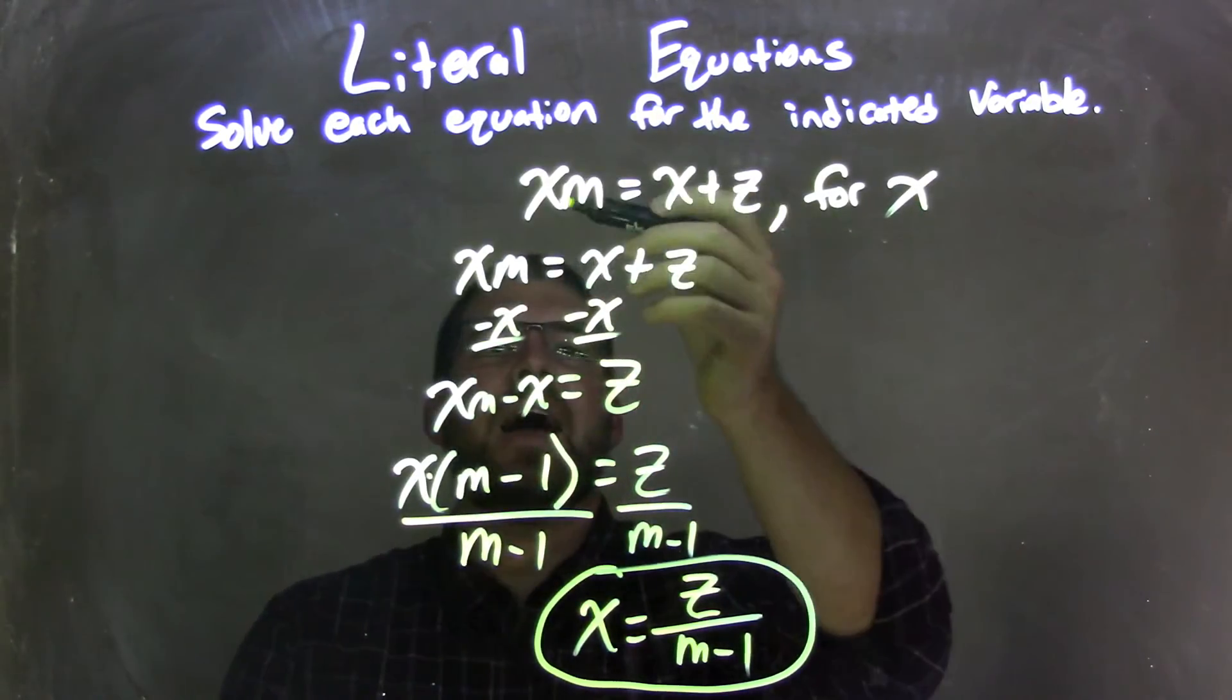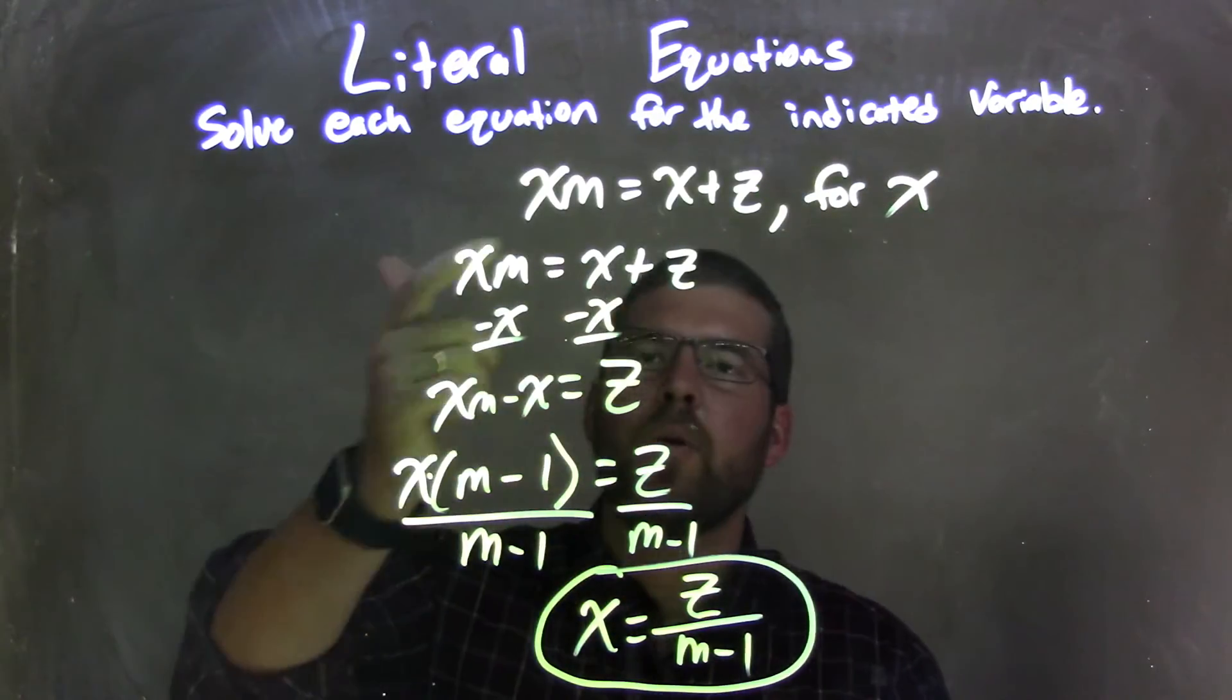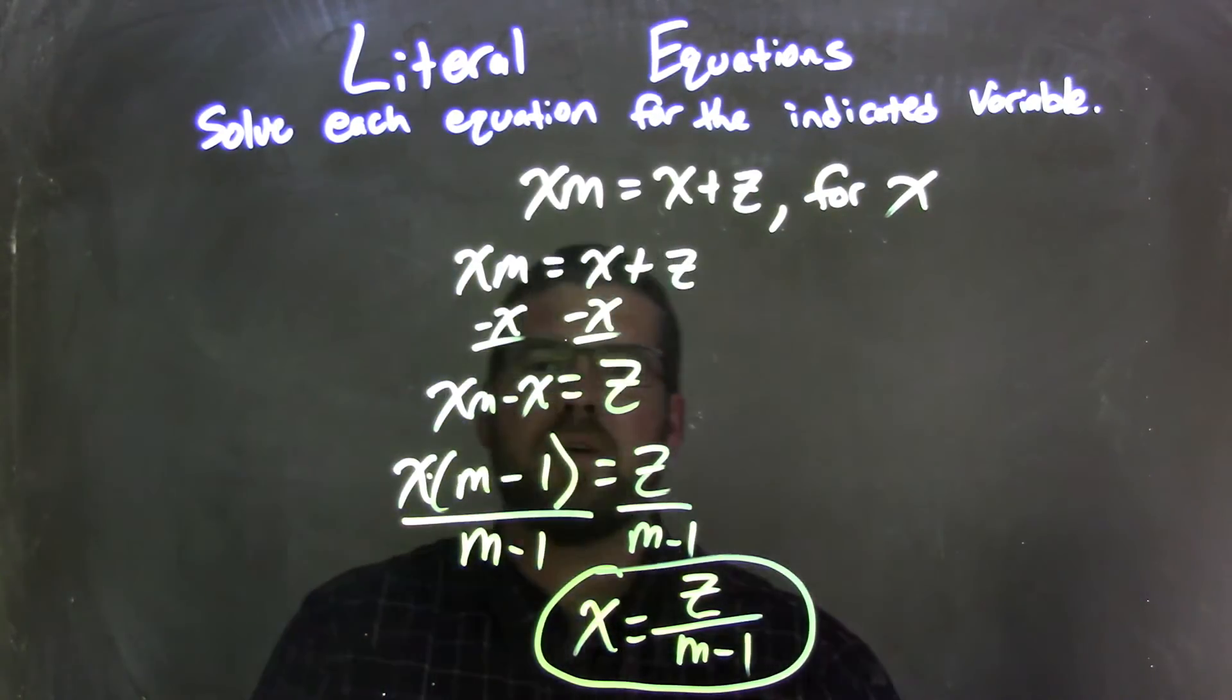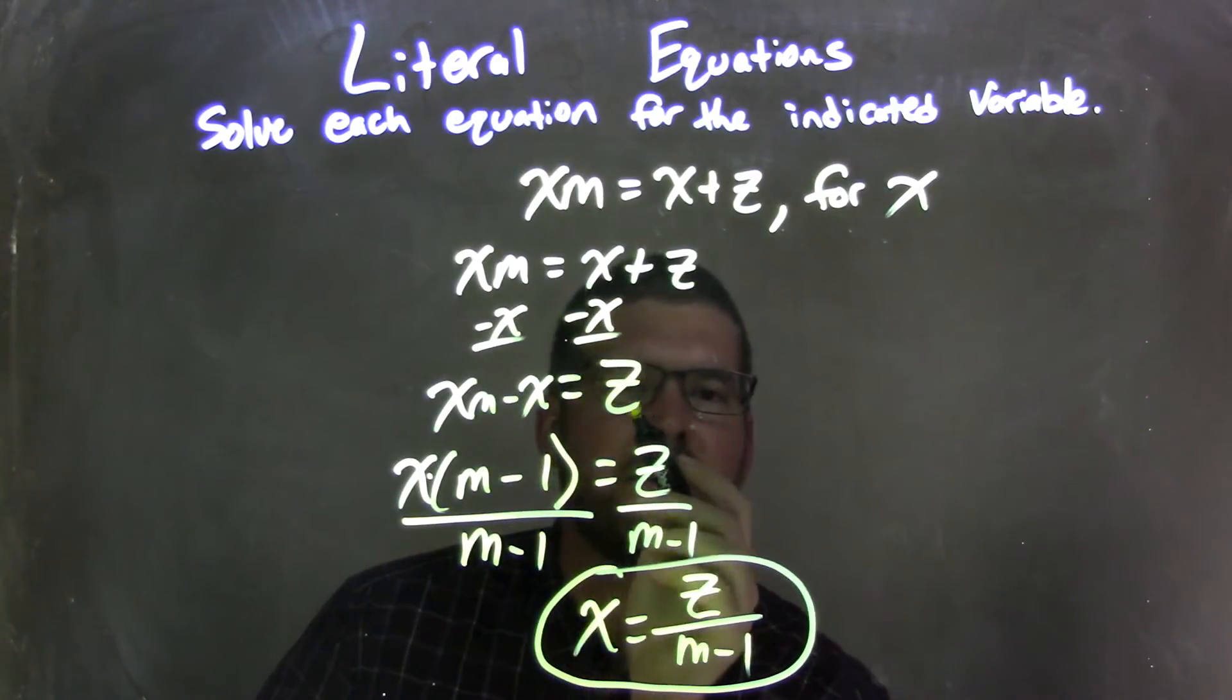So let's recap. We're given xm equals x plus z, and we're solving that for x. I rewrote my equation, then I subtracted an x from both sides, leaving me with xm minus x equals z.